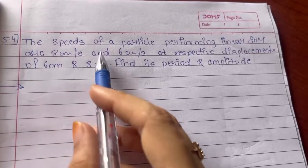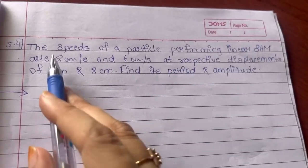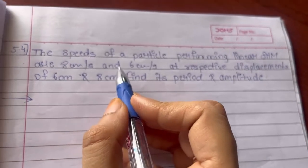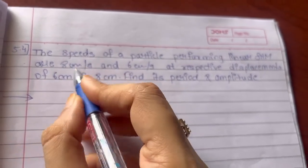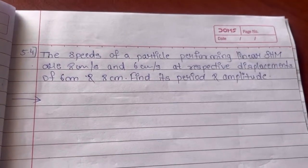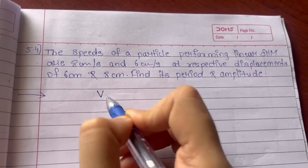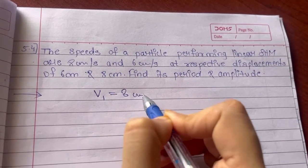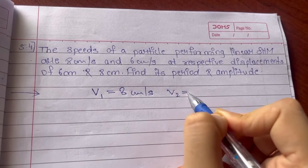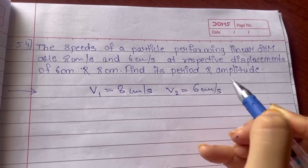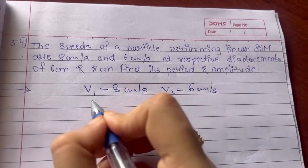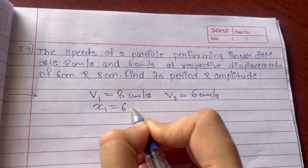Starting with numerical number 5.4. The speed of a particle performing linear simple harmonic motion are 8 cm per second and 6 cm per second. So here the speed of two particles is given to me. First particle has speed 8 cm per second, second particle has speed 6 cm per second at respective displacements. So x1 is 6 cm